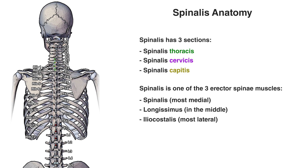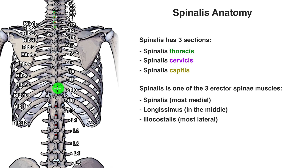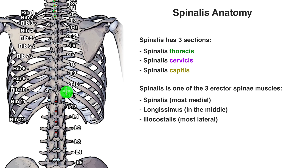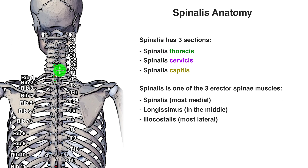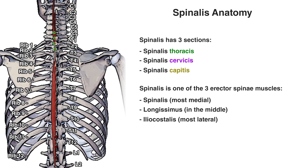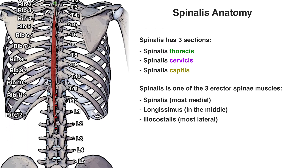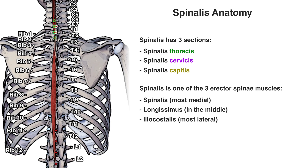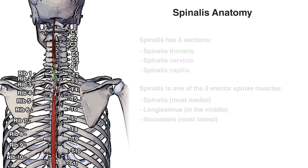You can now see all of the origin points of this muscle marked in red. The origins with the black outline are the thoracis section, the origins with the white outline are the cervicis section, and the origins with the green outline are the capitis section. You can see those origins on top of the muscle now so that you can better understand where they relate to in terms of each section of the muscle.